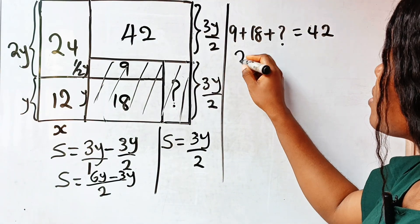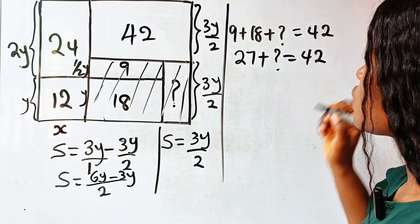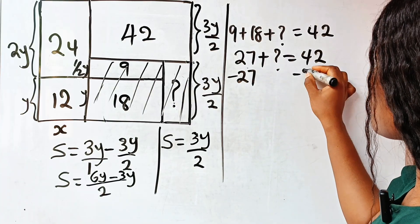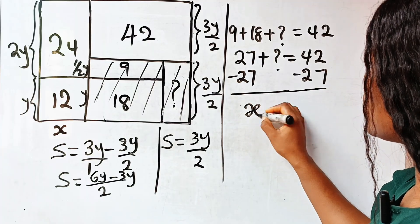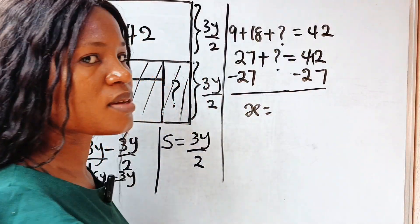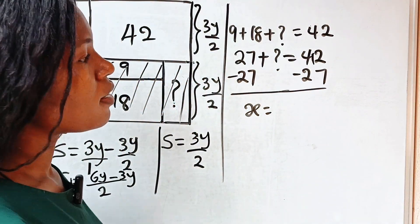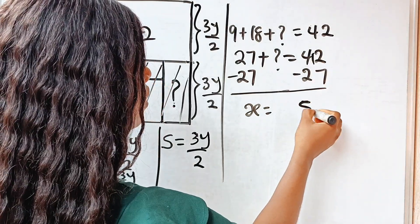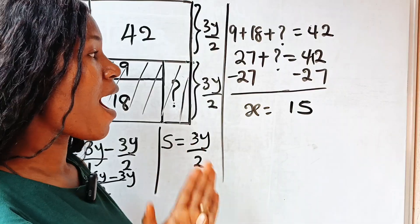18 plus 9 is 27, plus the unknown equals 42. Subtracting 27 from both sides, the unknown is equal to 42 minus 27, which is 15. So the area of the unknown portion is 15.